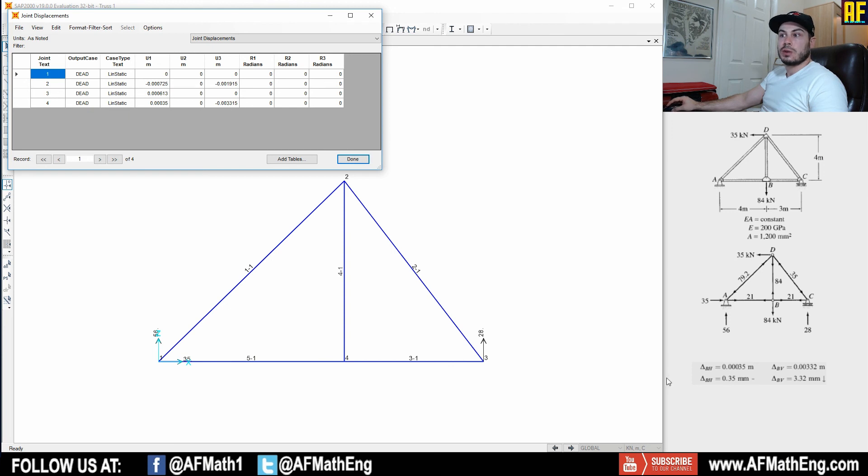And then we have negative 0.332 or they actually have more decimals here, 0.3315 down. Displacement at joint four, which is joint B in our question. So there, that's exactly correct. Exactly the same thing that they got here.